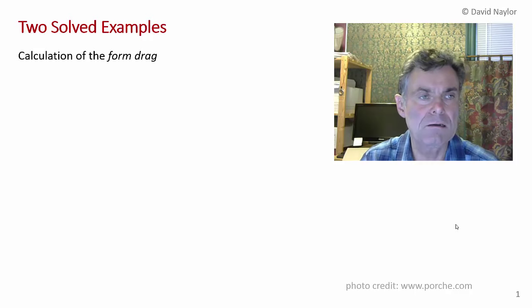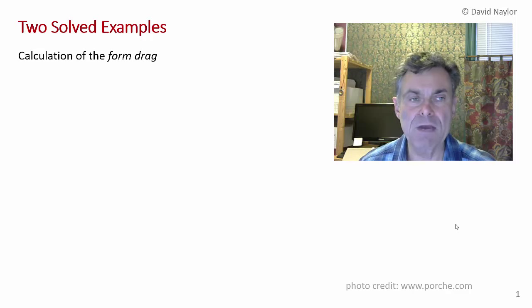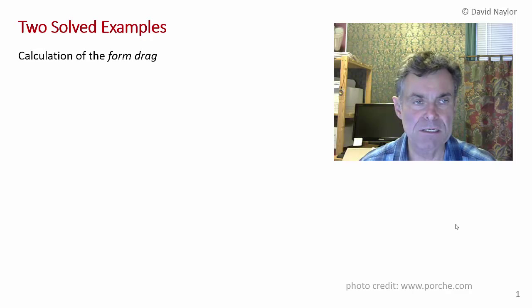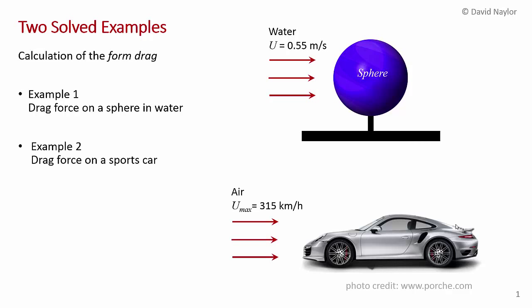I thought I'd do a couple of practical solved examples that make use of dimensional analysis. These two examples involve the calculation of form drag on an object, which is a rather practical problem for mechanical engineers. The first example involves calculating the drag force on a sphere in a flow of water, and the second example does the same type of calculation for the drag force on a sports car traveling at high speed in air.